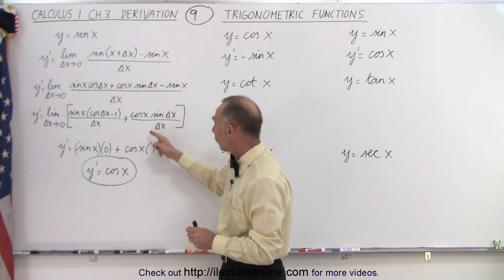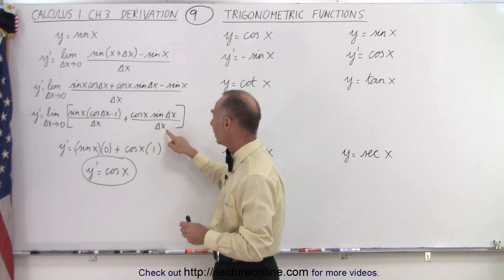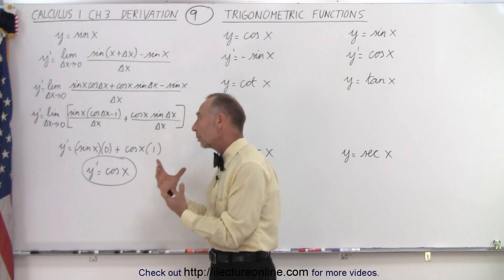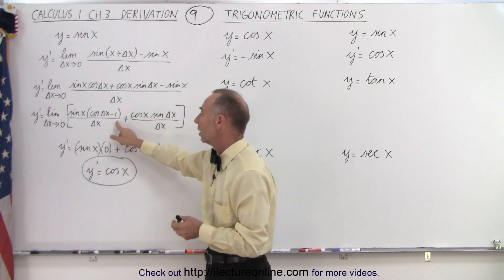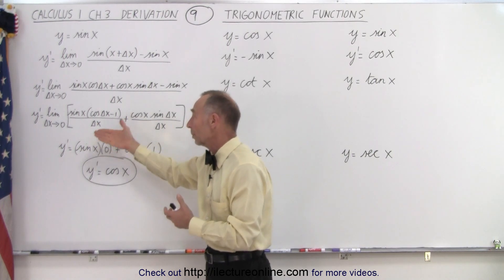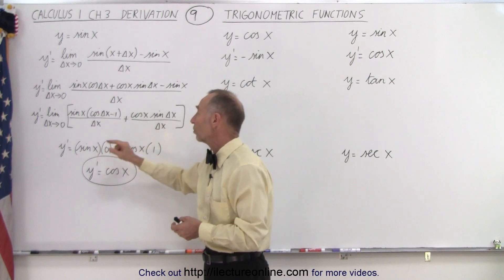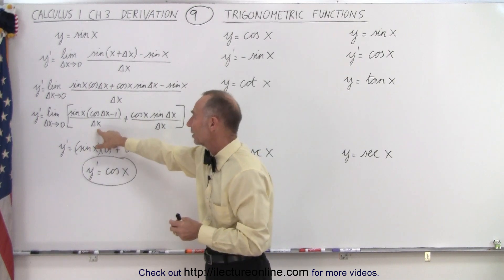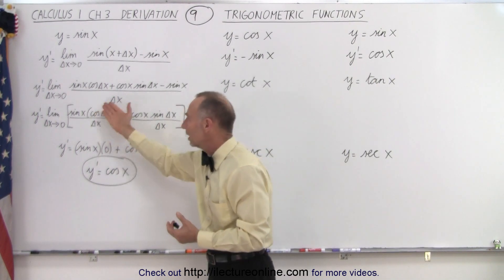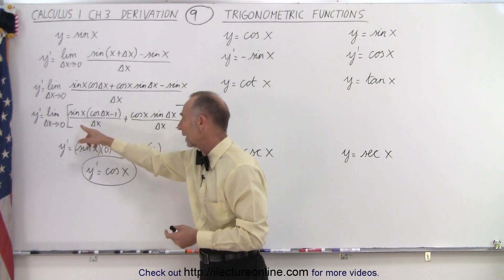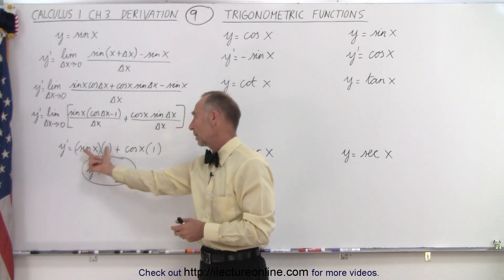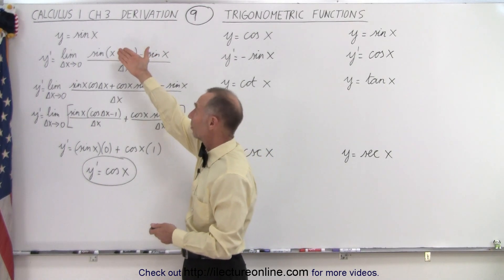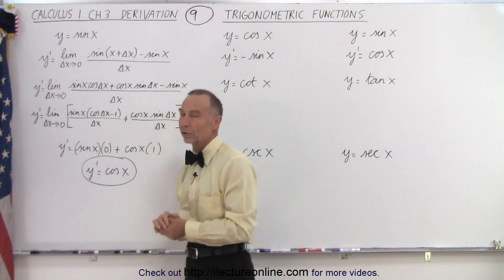Most of us know that sine of delta-x divided by delta-x, as delta-x goes to zero, equals one. Likewise, cosine of delta-x minus one, divided by delta-x, as delta-x goes to zero, becomes one minus one, or zero — the cosine of delta-x approaches one faster than delta-x approaches zero, so this reduces to zero in the limit. This term disappears, and we end up with simply the cosine of x. That's how we show that when we take the derivative of sine of x, we get cosine of x.